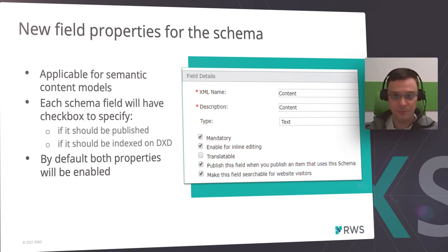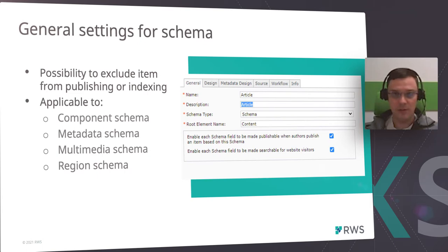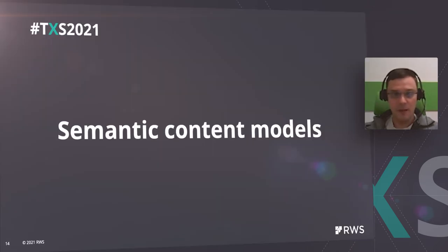A field can be excluded if it's required only by the Content Manager side — for example, used by the event system or workflow. When you define a new field, both properties are set to true by default. The schema also has general settings to mark it as publishable or indexable. If a schema is used only as a metadata schema and content should not be indexed, you can uncheck the settings related to indexing. If you want to exclude items based on a schema from publishing completely, you can uncheck the setting related to publishing. Both settings are applicable for component schema, metadata schema, multimedia schema, and region schema.